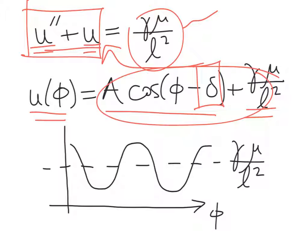And so u as a function of phi looks like this. It's just basically oscillating around the constant value gamma mu over l squared. And so we have for our u of phi an oscillatory solution.